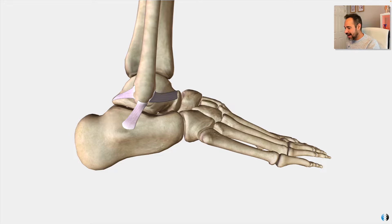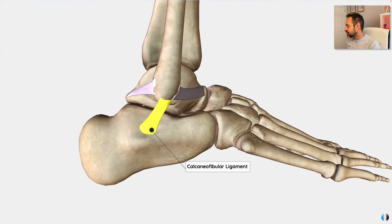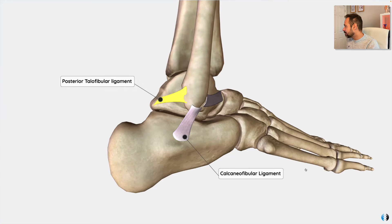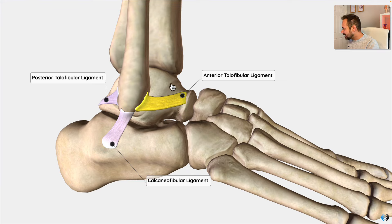And there are three of these. We have the calcaneofibular ligament, which, as the name suggests, is where the ligament joins from the calcaneus to the fibular bone here. We also have the posterior talofibular ligament, which is at the posterior side of the ankle, joining from the talus to the fibula. And then finally, we have the anterior talofibular ligament. This is by far the most common one that's injured, and it attaches from the anterior talus to the fibula.